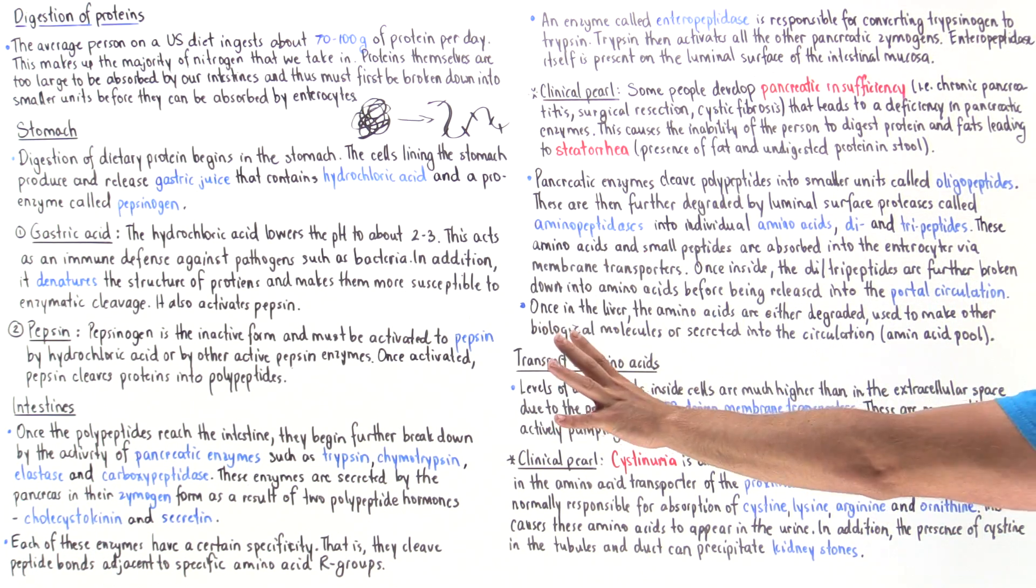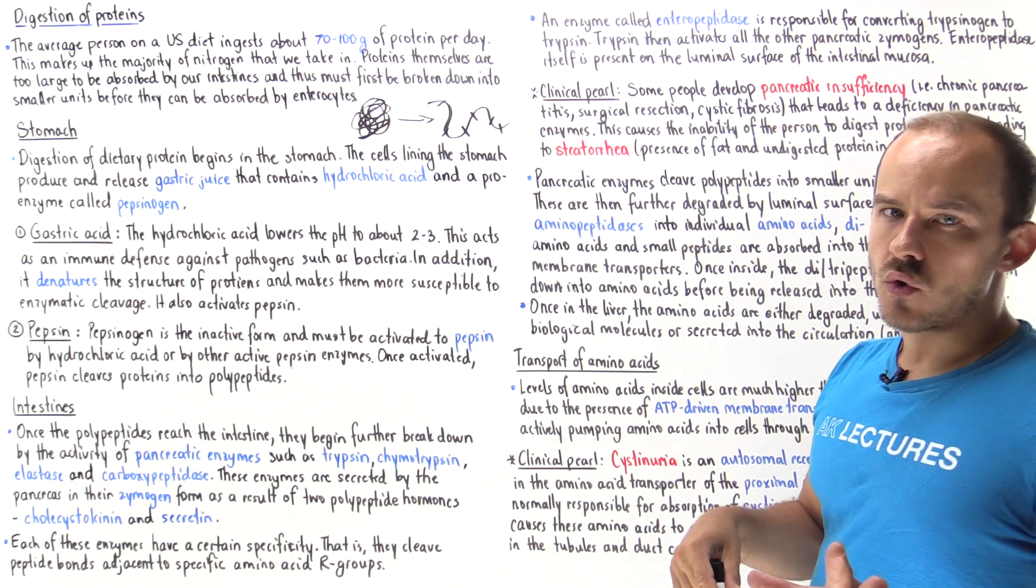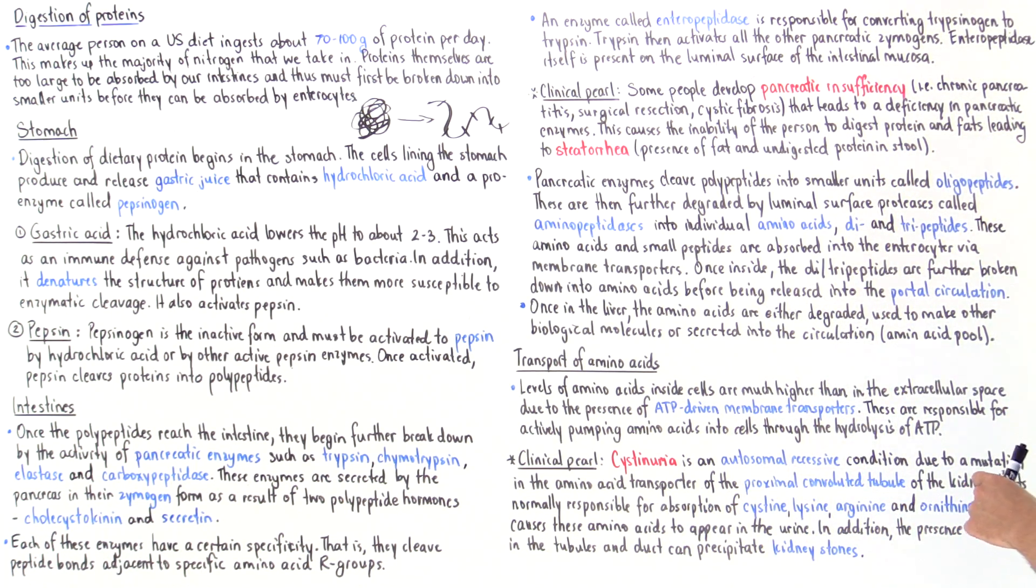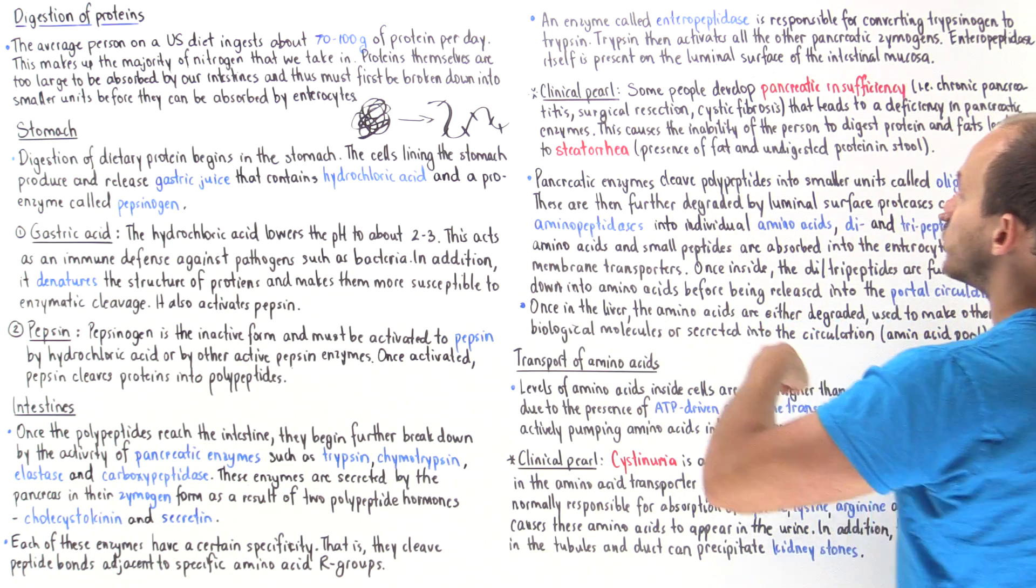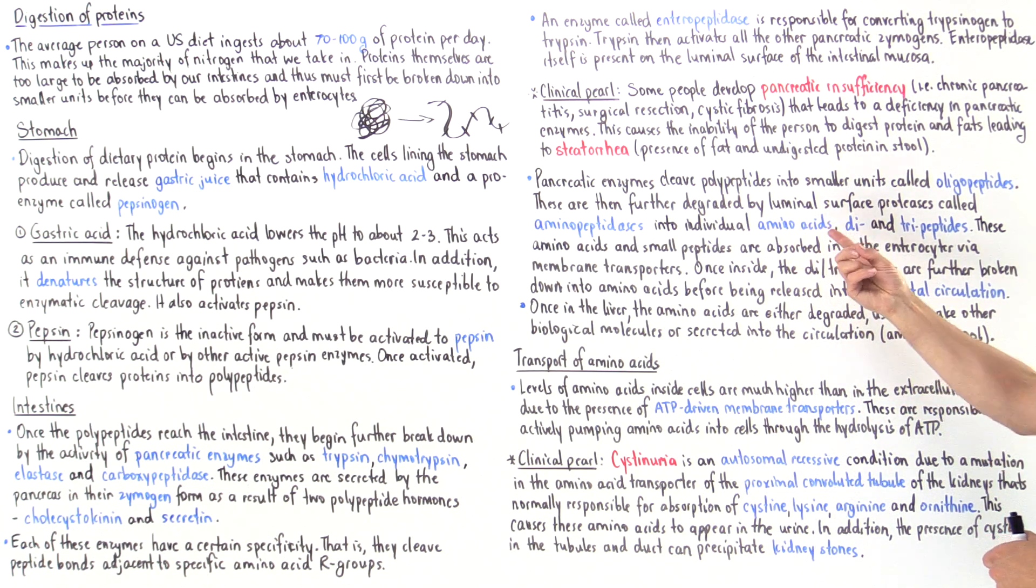Once we break down these polypeptides into oligopeptides, that's not the end of the story. The next step is we actually have to further break down those oligopeptides into individual amino acids, dipeptides, and tripeptides. This occurs as a result of the presence of aminopeptidases, which are present on the luminal surface of intestinal mucosal cells.